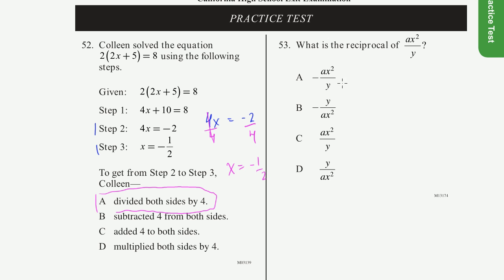A reciprocal of something is just 1 over that something. Or if it's a fraction, you just flip it. So if you have a over b, the reciprocal is b over a.